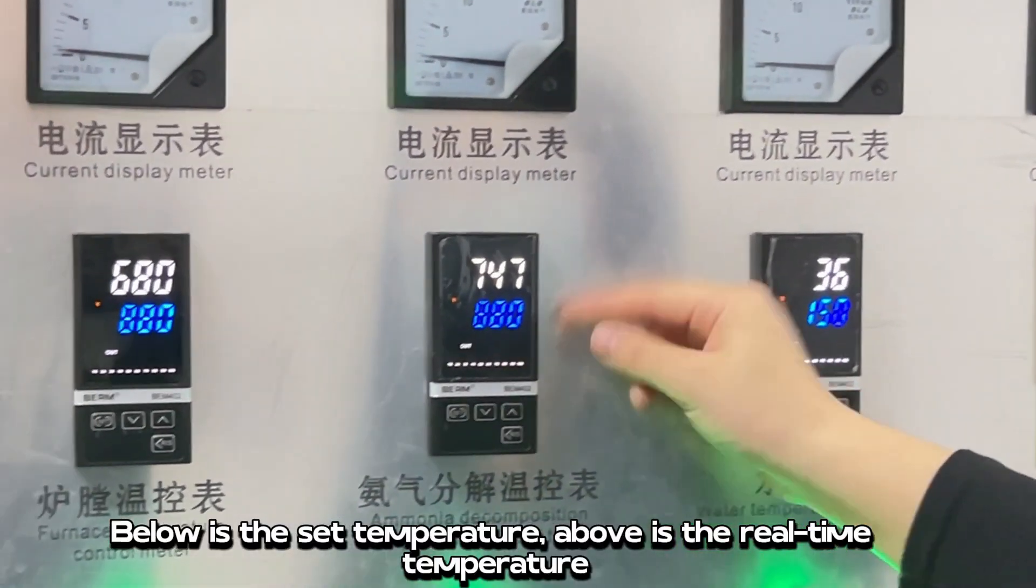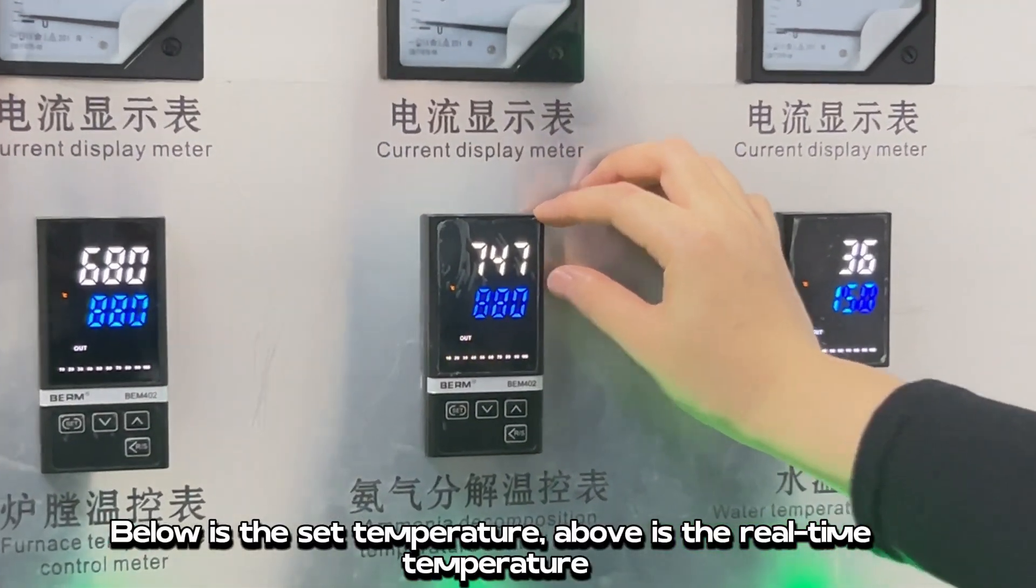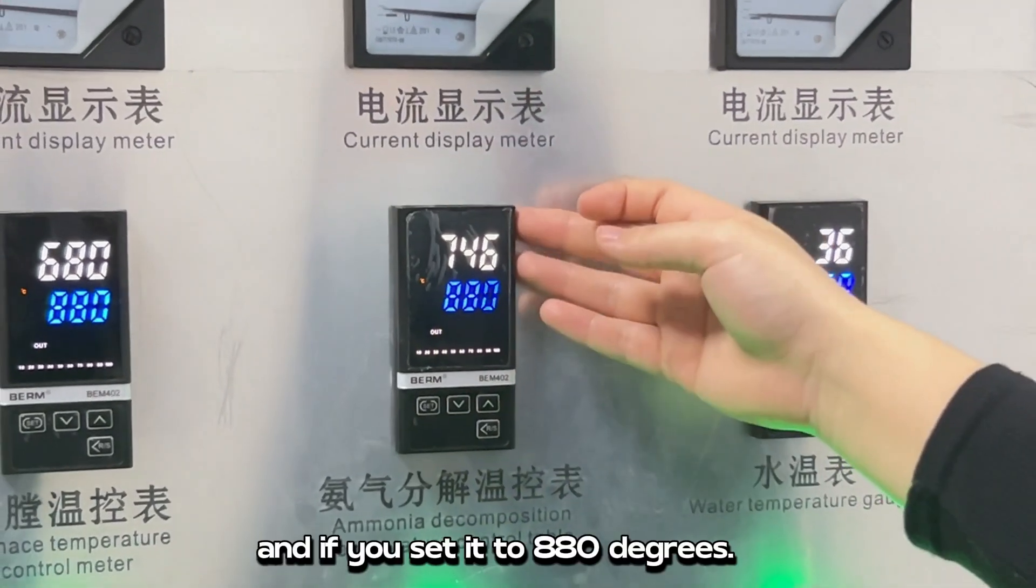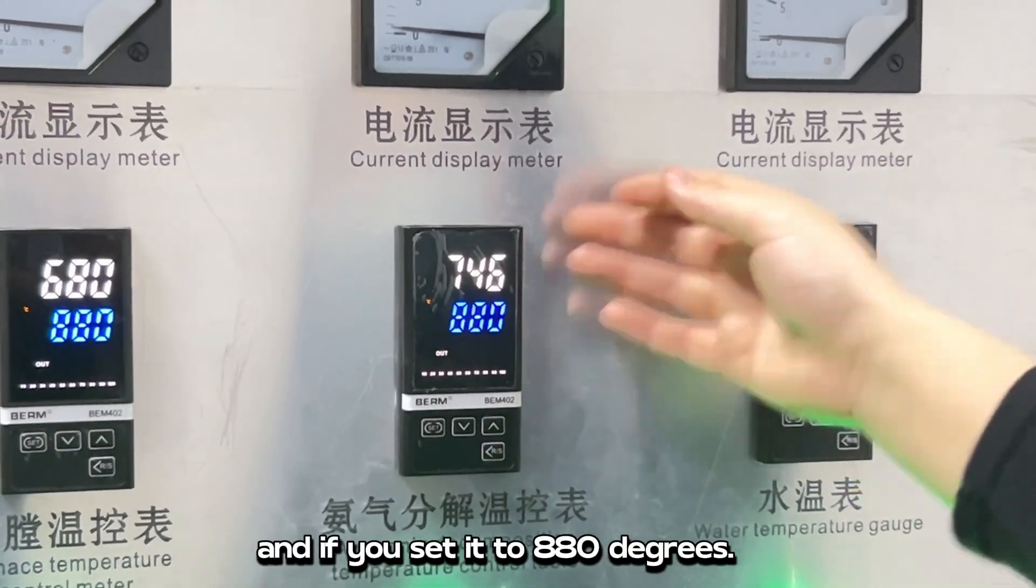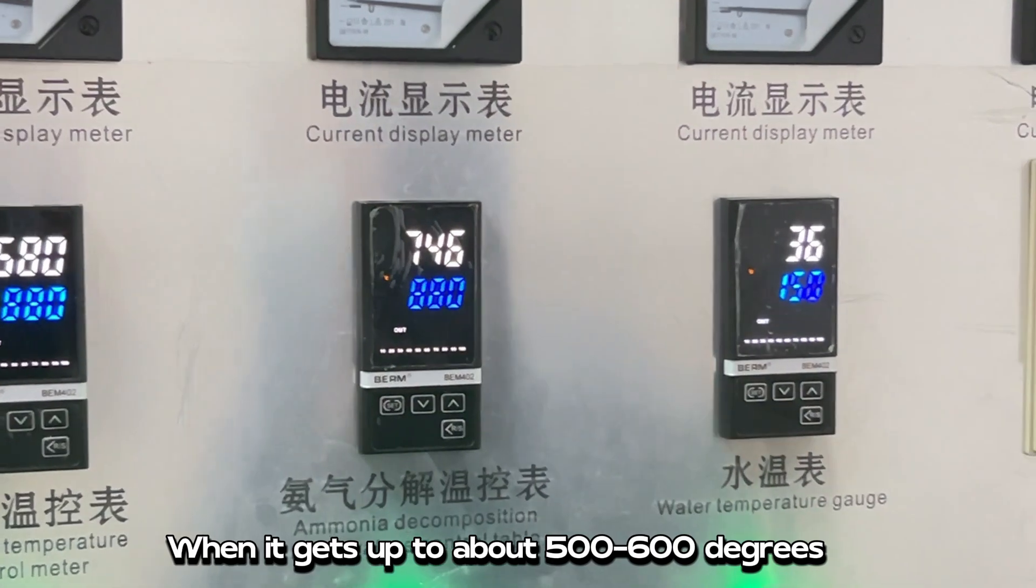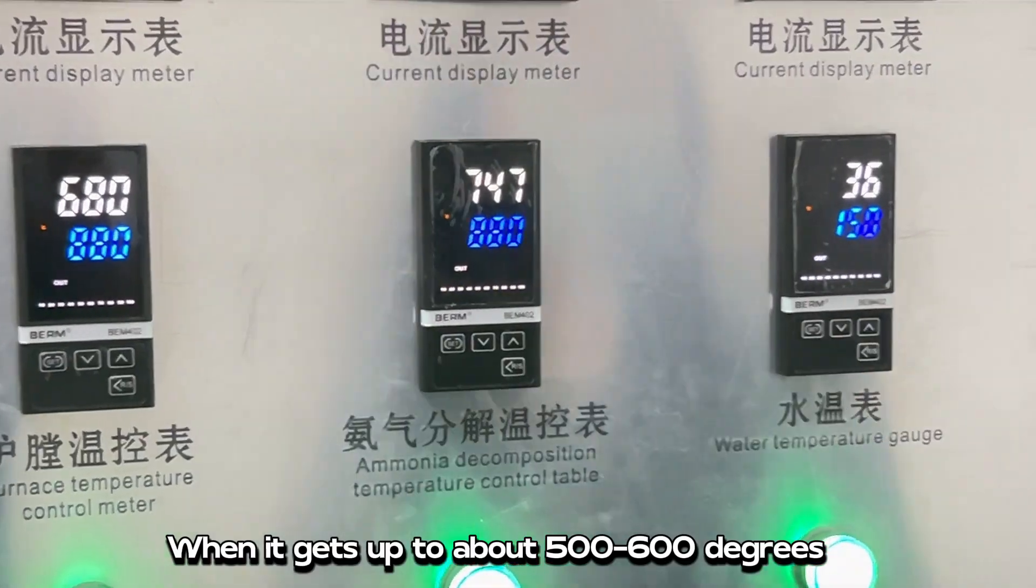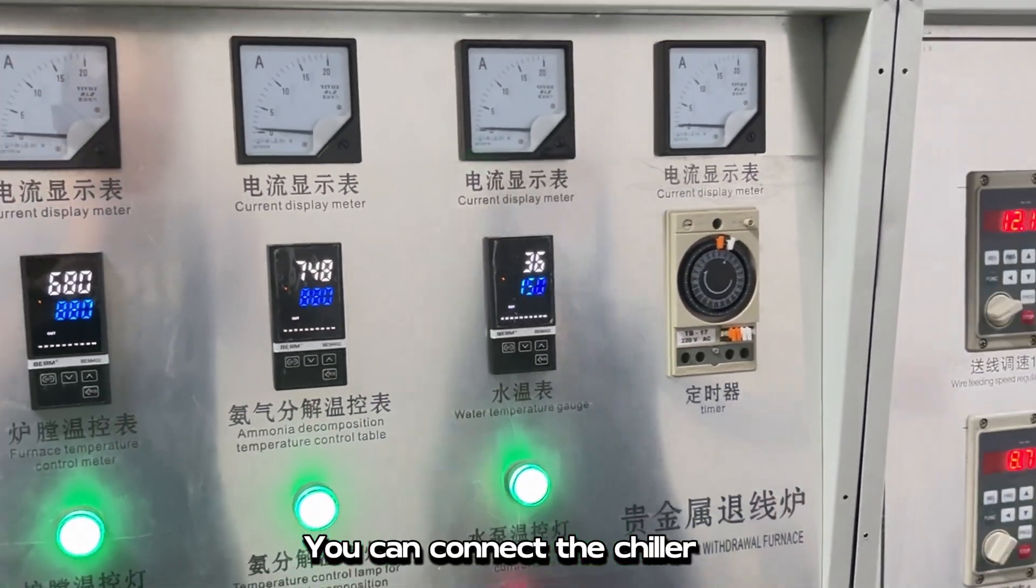Below is the set temperature, above is the real time temperature. And if you set it to 880 degrees, when it gets up to about 500-600 degrees, you can connect the chiller.